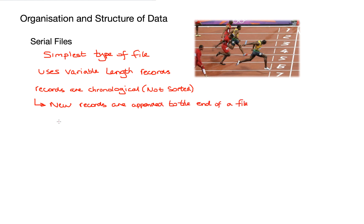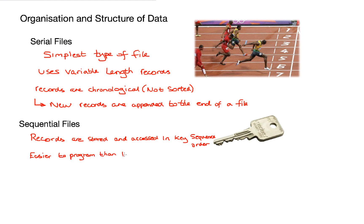Looking at the next type of file handling, we have sequential files. The records in sequential files are stored and accessed in key sequence order. So each piece of data has a corresponding key. It's easier to program than index sequential files, but we're going to look at those just after this. Sequential files have fewer memory overheads. That means that they take less memory to store than index sequential files.